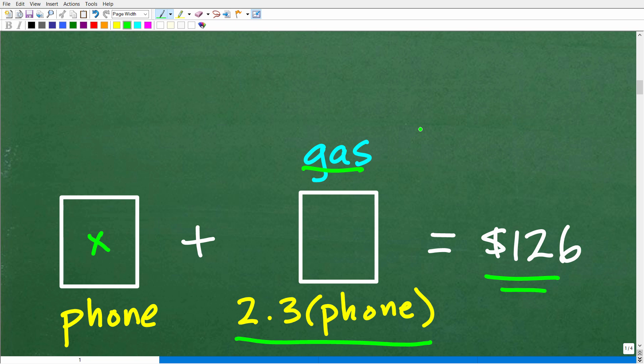Now, as I indicated in the beginning of this video, I'm going to be using algebra to solve this problem. Because algebra is an awesome tool, because I can let a variable, let's say like x, represent an unknown value. So what I'm going to do is I'm going to let this variable x represent Kim's phone bill. Now we know that her gas bill is 2.3 times whatever her phone bill is. Now, if I say her phone bill is x dollars, well, her gas bill is going to be 2.3 times that amount.